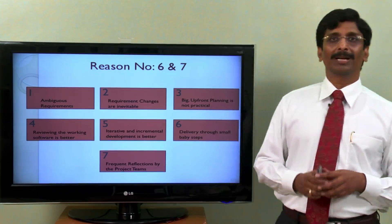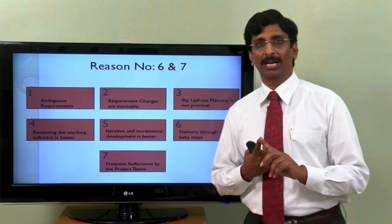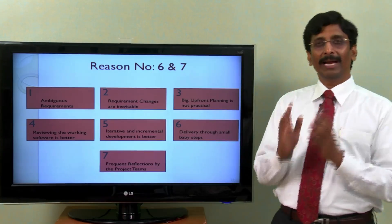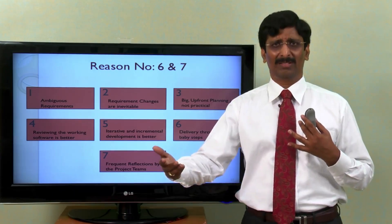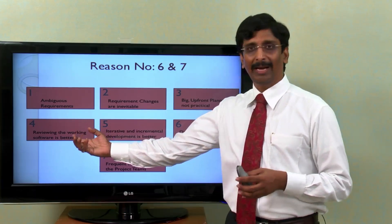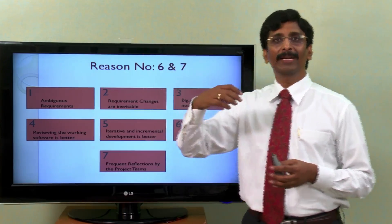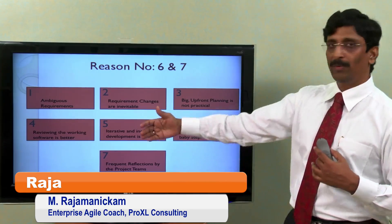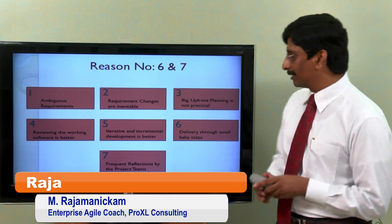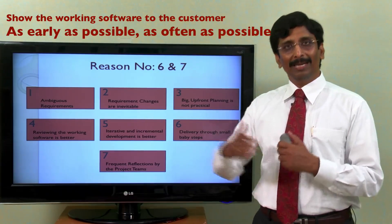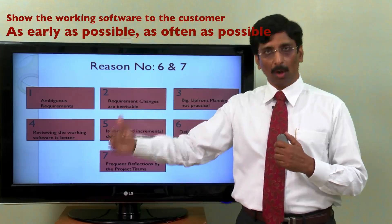Reviewing the working software, that is the major cornerstone of Agile. As we discussed earlier, we show the working software at the end of every month or every two weeks, if possible. So we show the working software to the client and ask the client to evaluate the working software and give additional ideas. And we do it more frequently. And as the saying goes, we show the working software to the client as early as possible and as often as possible.